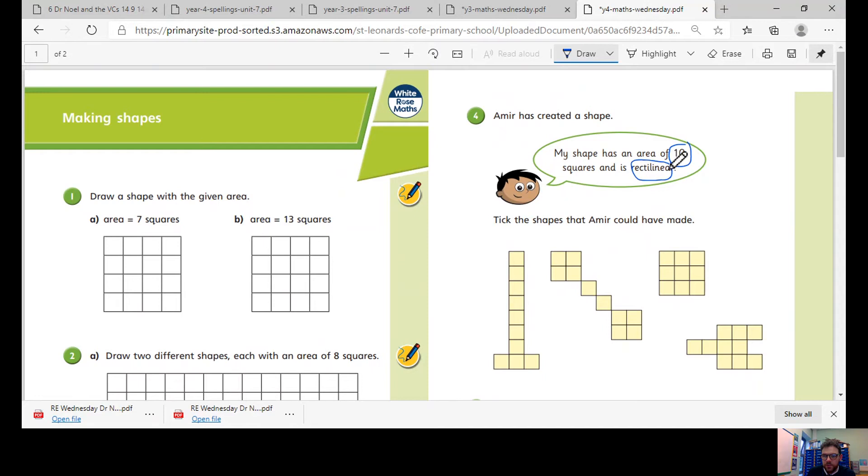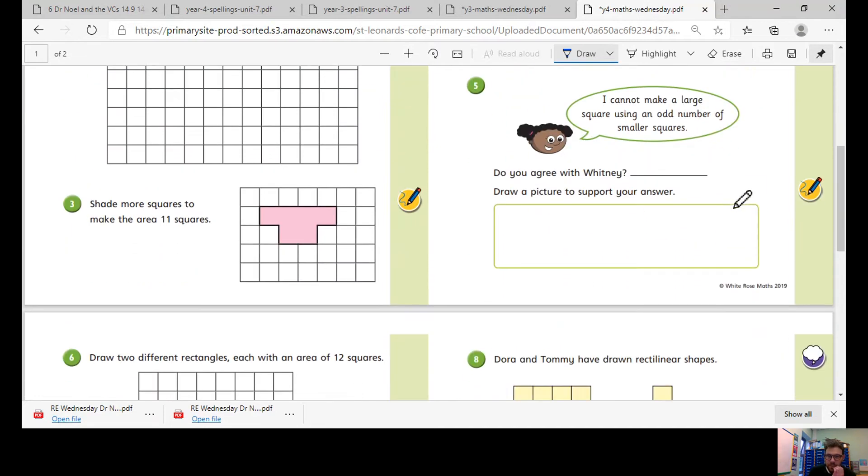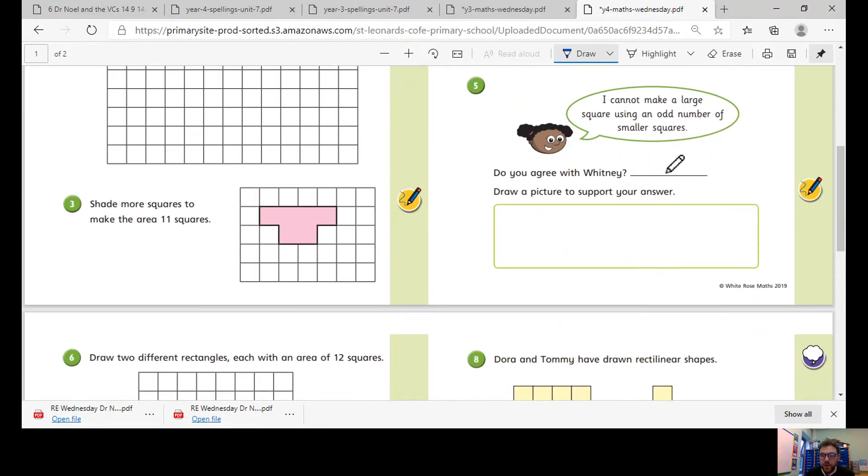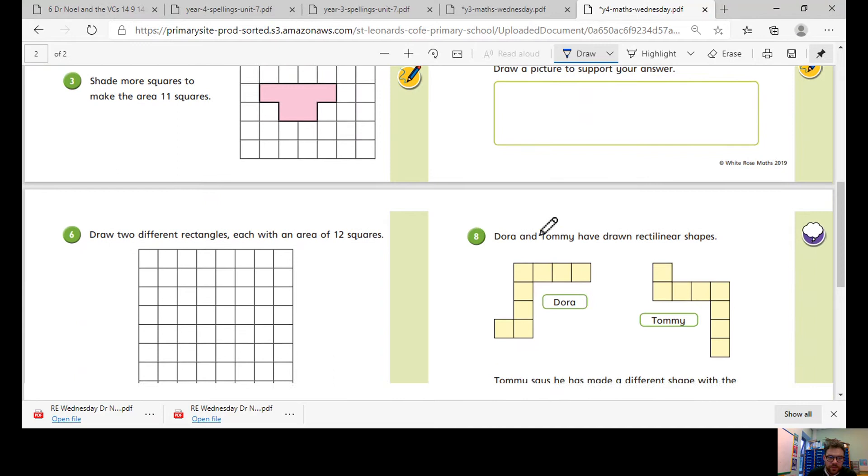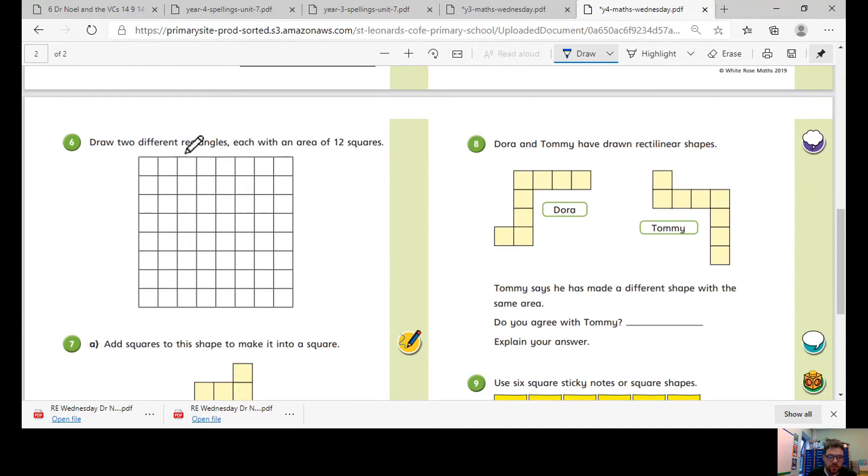I cannot make a large square using an odd number of small squares. Do you agree? Draw a picture to support your answer, so show me if you could make a square using large squares using odd numbers. Have a go, investigate it.